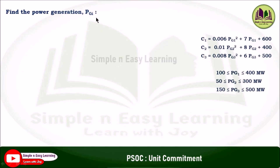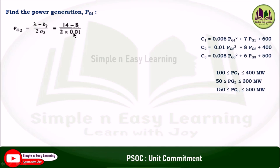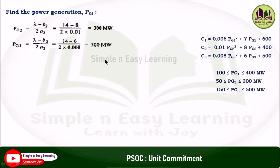Next, find the power generation pgi using the formula pgi equals lambda minus bi divided by 2ai. For unit 2, pg2 equals lambda minus b2 divided by 2a2, substituting lambda equals 14 gives 300 megawatt. For unit 3, pg3 equals lambda minus b3 divided by 2a3, which gives 500 megawatt. Adding these gives the total demand of 800 megawatt. Checking the limits: pg2 is within 50 to 300 and pg3 is within 150 to 500, both lie within limits.